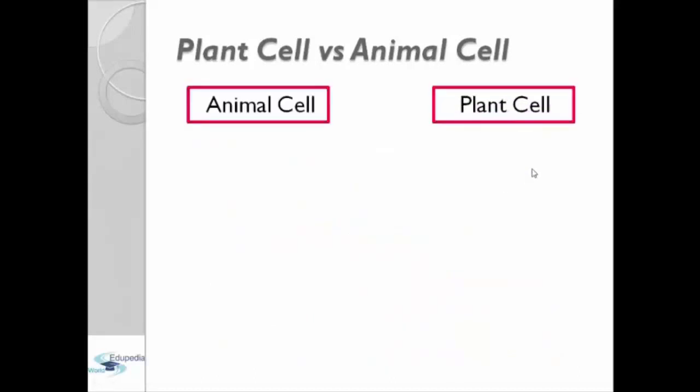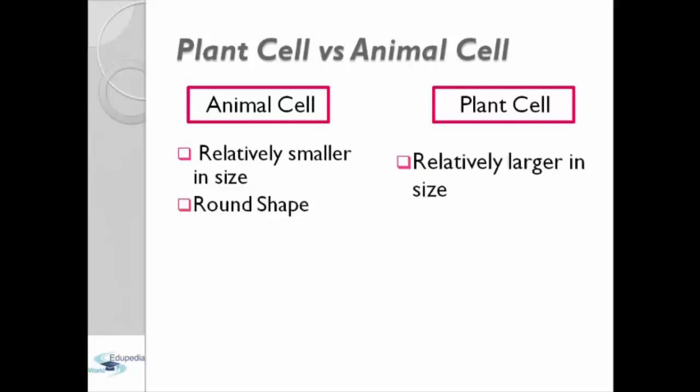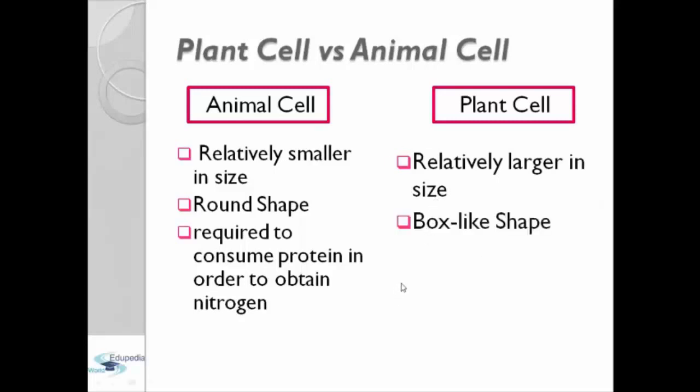Plant cells versus animal cells. Animal cells are relatively smaller in size, round shape, and required to consume protein in order to obtain nitrogen. While plant cells are relatively larger in size, looks like a box shape, and able to utilize inorganic forms of the element.